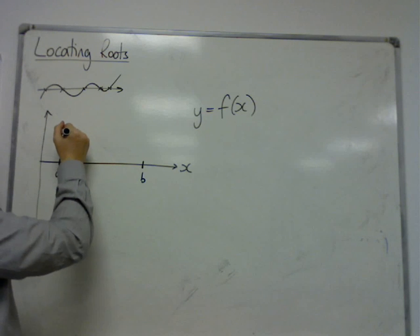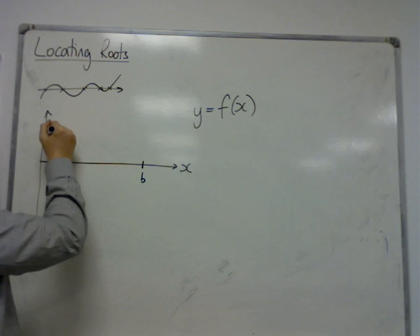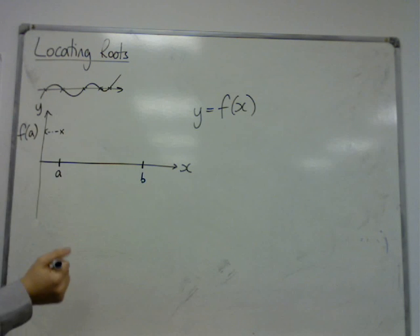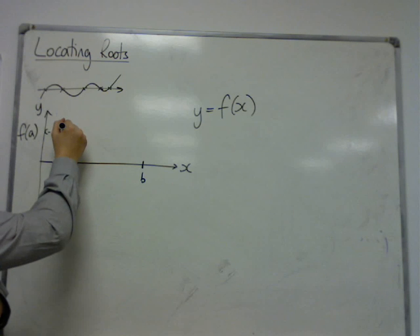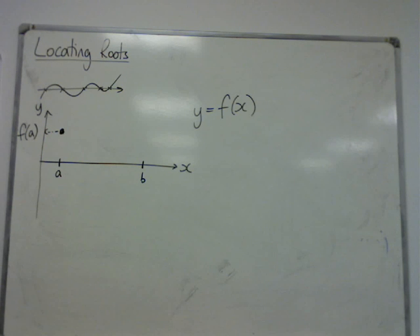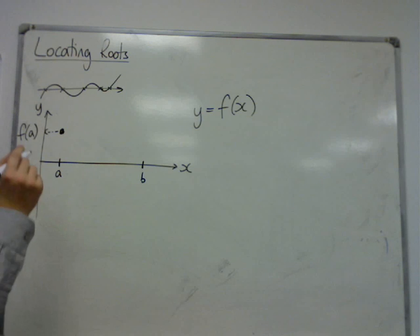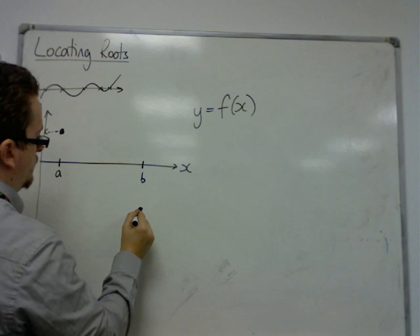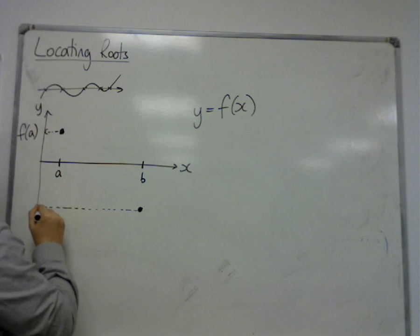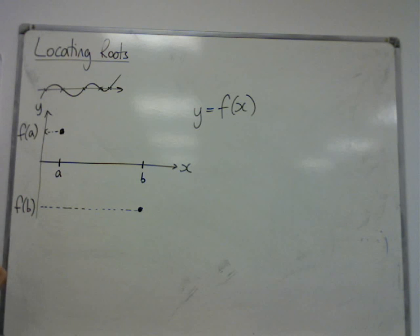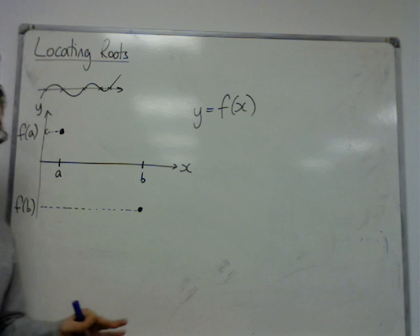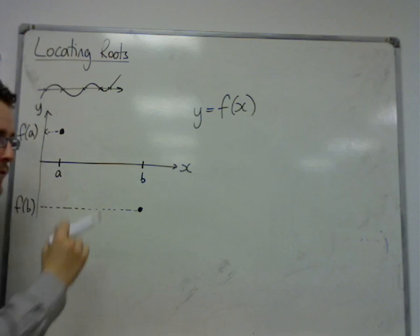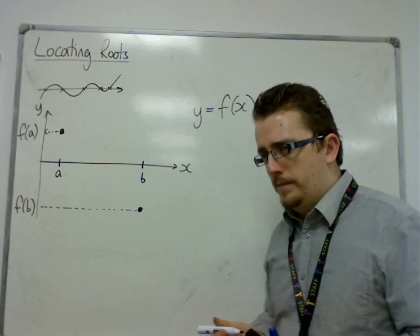This would be f of a on our y-axis. That's the point f of a. And then when we substitute in b, we get a point down here, for example. This would be f of b. You'll notice that I've purposely made sure that the point for a is above the x-axis and the point for b is below the x-axis.